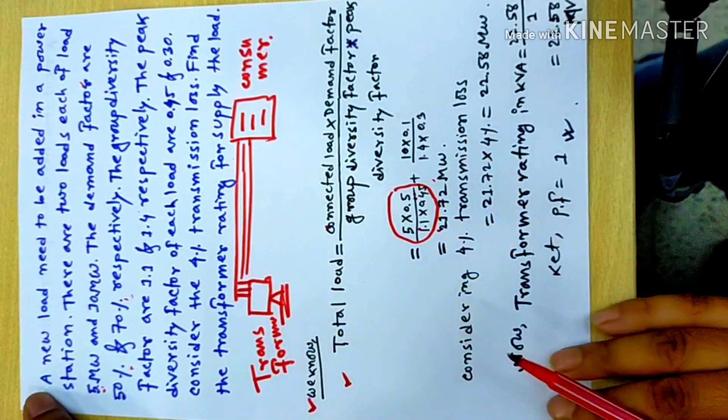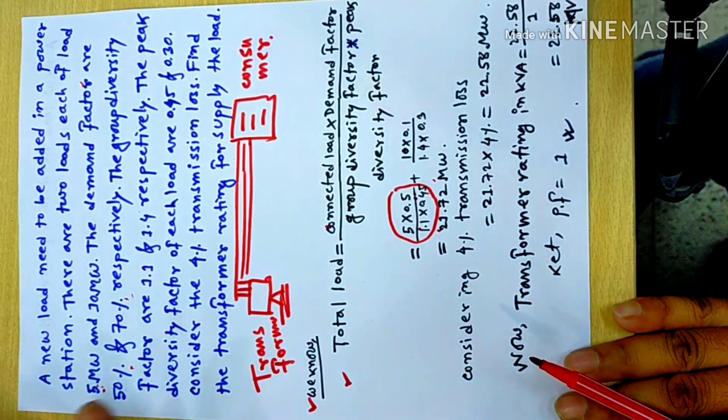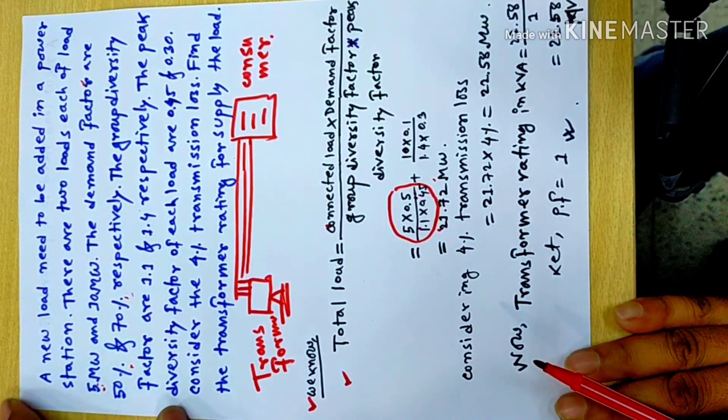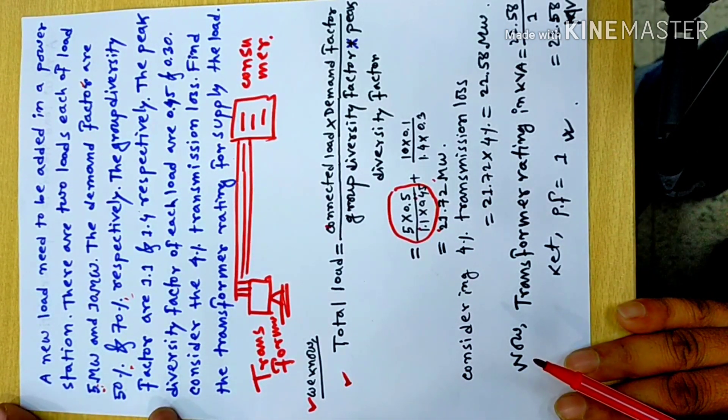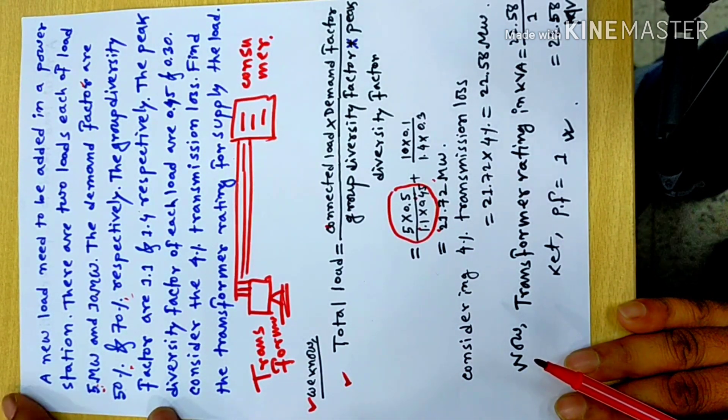Consider the 4% transmission loss and find the transformer rating required to supply the load. These are the main points of this Power Plant Engineering problem.